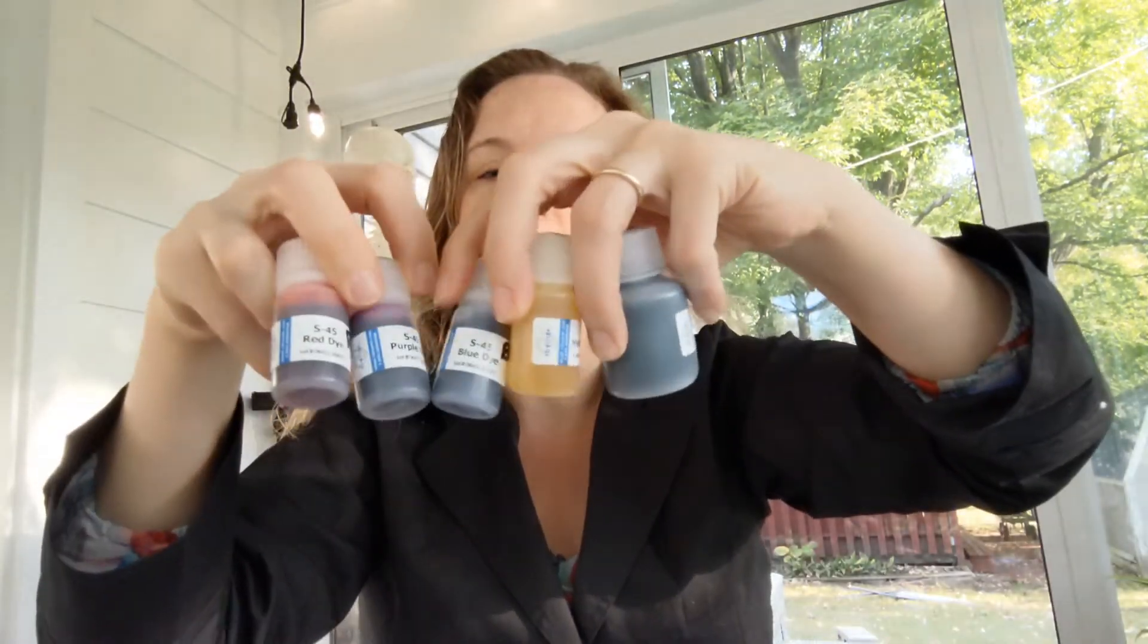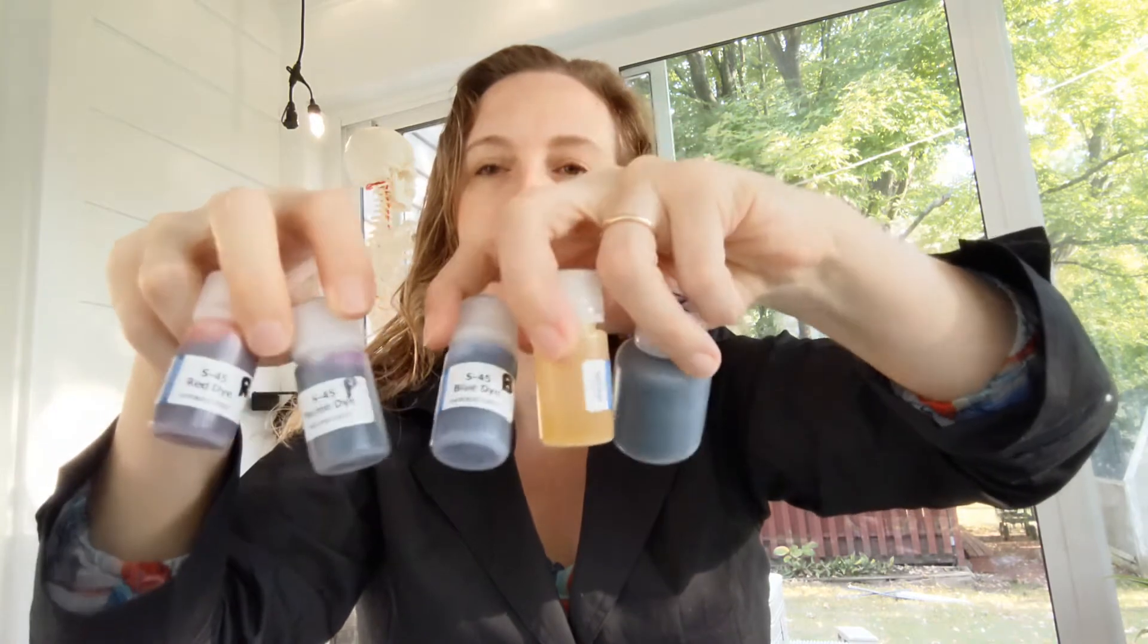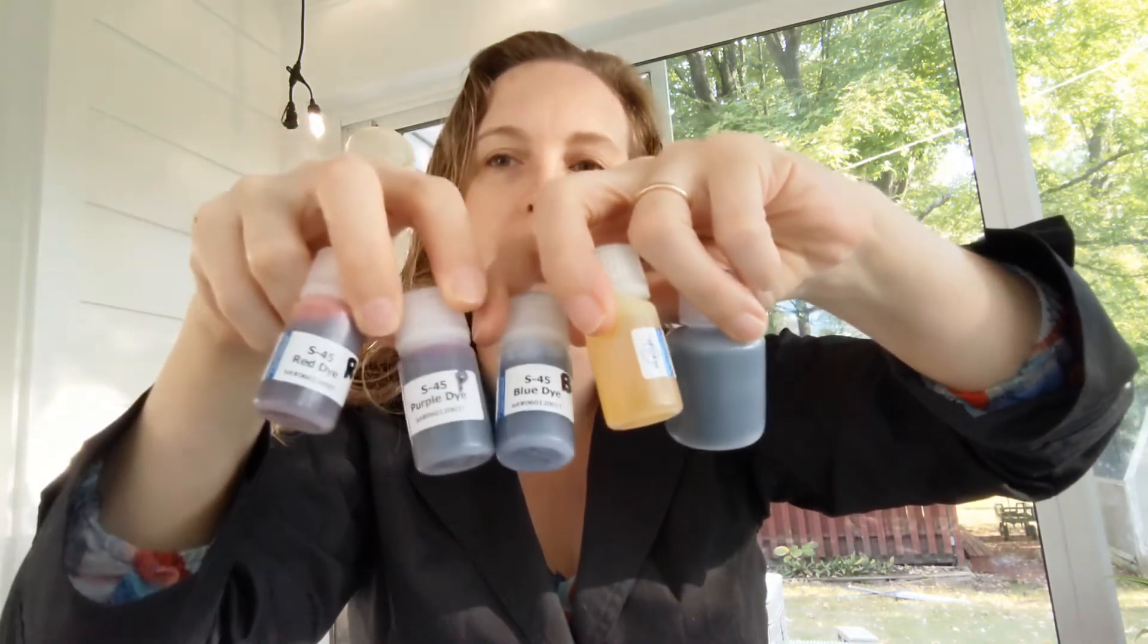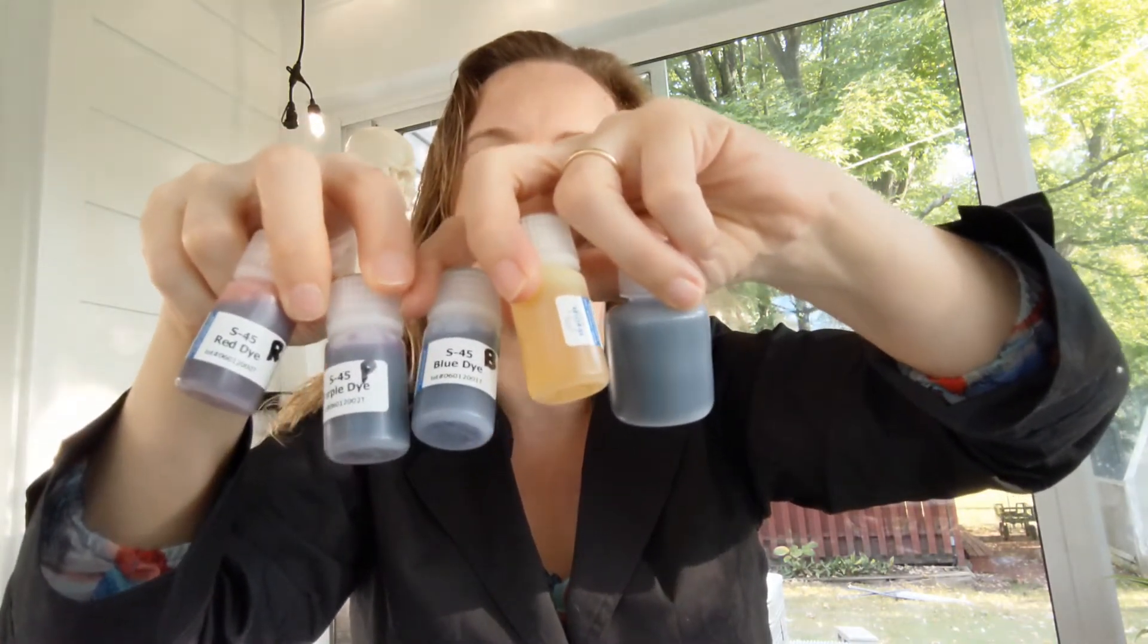I love this because the prep for it is so simple. You get your five bottles of dye: navy, yellow, blue, purple, and red. And I went ahead and did the letters on the side.